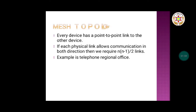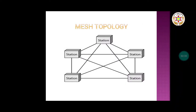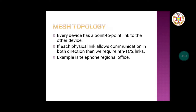In mesh topology, each device or station is connected with every other device with an end-to-end connection. Every device has a point-to-point link to the other device — a dedicated link. If each physical link allows communication in both directions, then we require n(n−1)/2 links, where n is the number of nodes. In the diagram we can see there are 5 stations, so n equals 5.